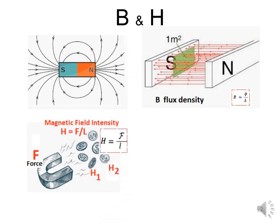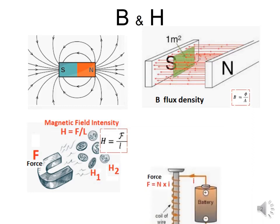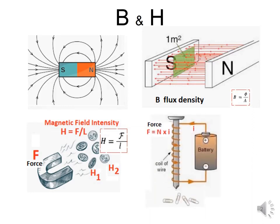H is equal to the magnetic force — the magnetomotive force — divided by the distance. The same concept goes to an electromagnet, a magnet created from electricity. The only difference here is that the force, or the magnetomotive force, is now N — the number of turns of the coil — multiplied by I, the current flowing through it. So force is now N times I.